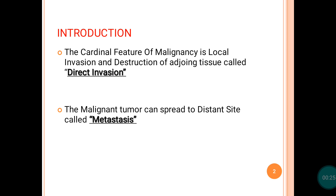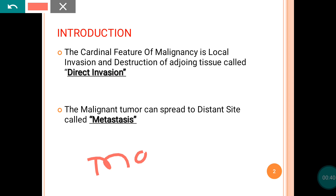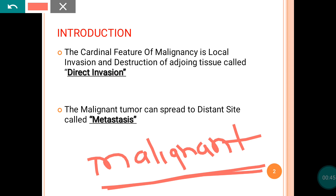You might be familiar that only malignant tumor can spread. Usually benign tumor doesn't spread. Usually benign tumor can compress the surrounding tissue, but it cannot spread. Only the malignant tumor can spread distally or locally. So we will discuss the spread of malignant tumor only. The benign tumor will not spread.